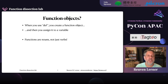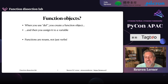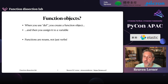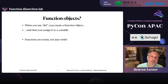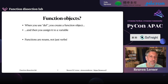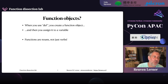When you use def, you create a function object and then assign it to a variable. There are many languages in which you have separate namespaces — one for data and one for functions. That is not true in Python. In Python, we have one namespace shared by both variables and functions. So you cannot have a variable x and a function x in the same program — the last one defined is the one that currently holds that value. Because functions are objects, we can treat them as nouns, not just as verbs.